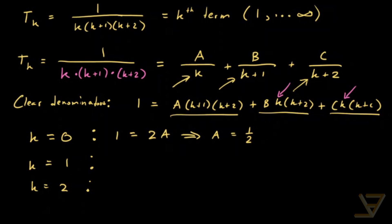For k = -1, the A and C terms vanish. We're left with 1 = B times the coefficient — substituting k = -1 into k(k+2) gives (-1)(1) = -1 — so we get 1 = -B, which implies B = -1.